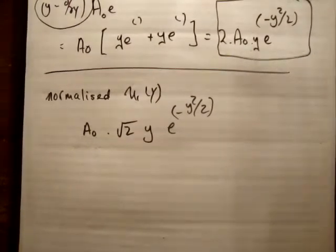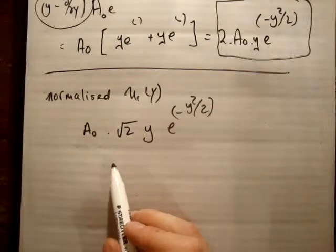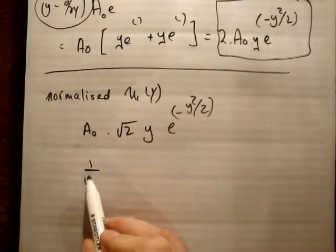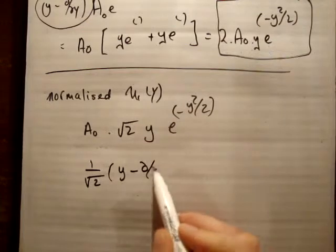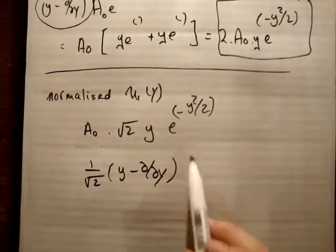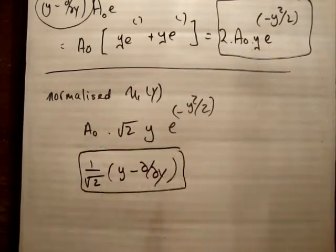So all we can say is as follows. If we do the following, if we have 1 over root 2, Y minus DDY, that should give us our proper or our normalized wave function.